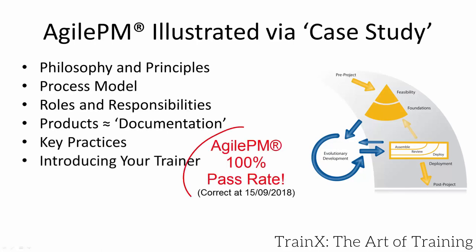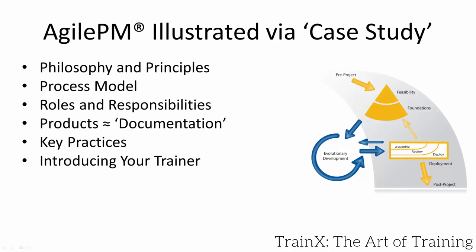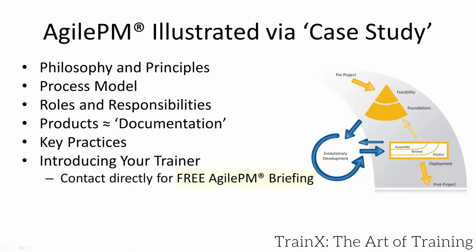I'm Simon Garlick, your trainer. I have a background in business analysis and project work for businesses, public services and software development organisations. I also specialise in learning and development, training trainers in instructional skills. In this capacity I've worked for Microsoft, Adobe and the UN, amongst many organisations. Contact me for a free Agile PM briefing. After the 30 minutes, I'll describe Agile PM's training and certification process.